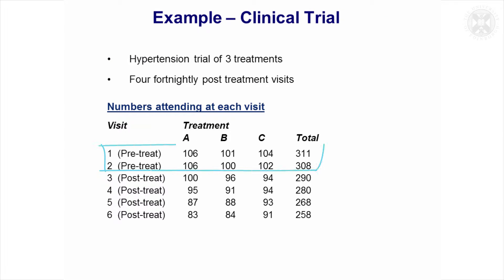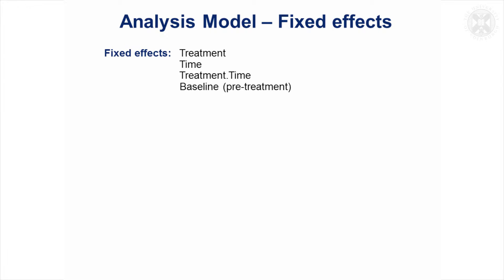Because we had these pre-treatment measurements, we'll take the second pre-treatment measurement and fit that as a baseline covariate in the model. That's going to reduce the amount of variability in the data by taking into account the variability between the patients before they even got the treatment.